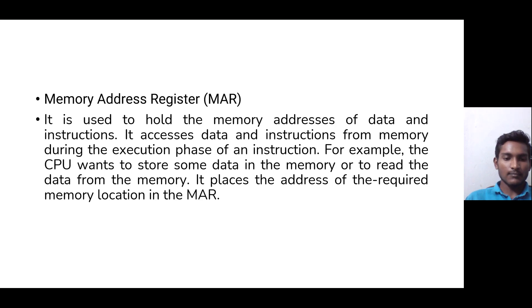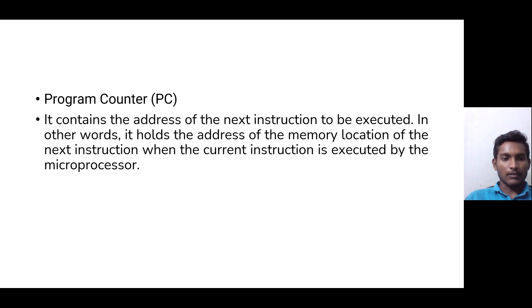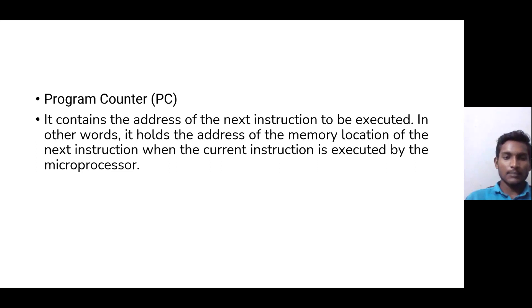The program counter contains the address of the next instruction to be executed. In other words, it holds the address of the main memory location of the next instruction. When the current instruction is executed by the microprocessor, its purpose is to keep track of the instructions.